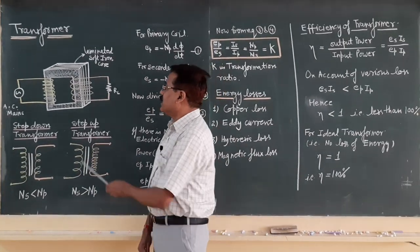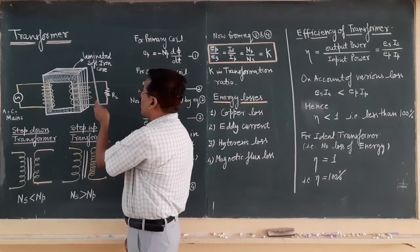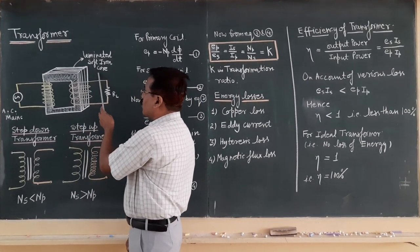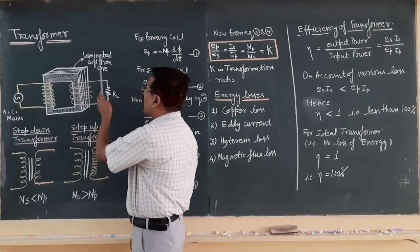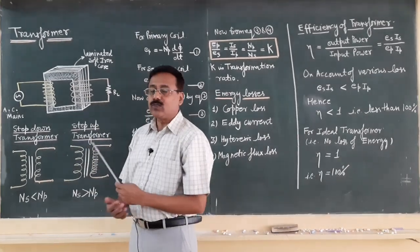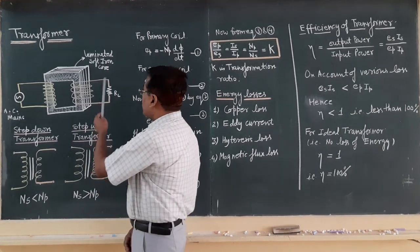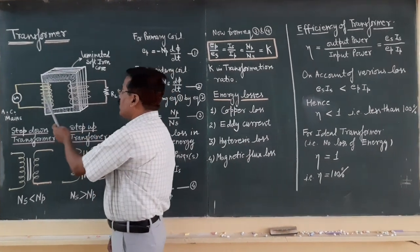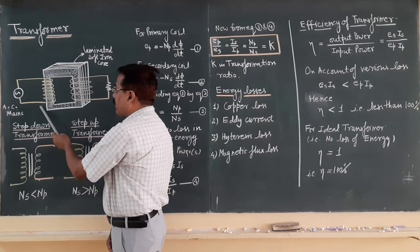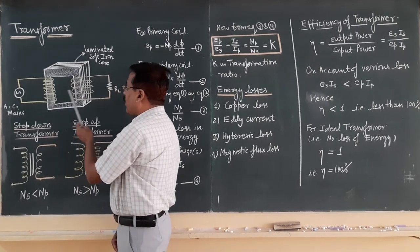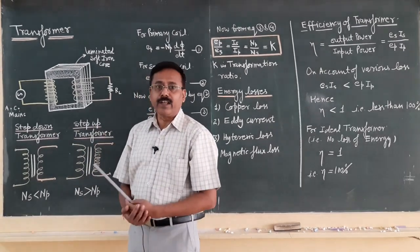Construction-wise, the transformer consists of a soft iron core, and this soft iron core is laminated. On this laminated soft iron core, we have two windings. The first winding is termed the primary coil, and the second winding is termed the secondary coil.